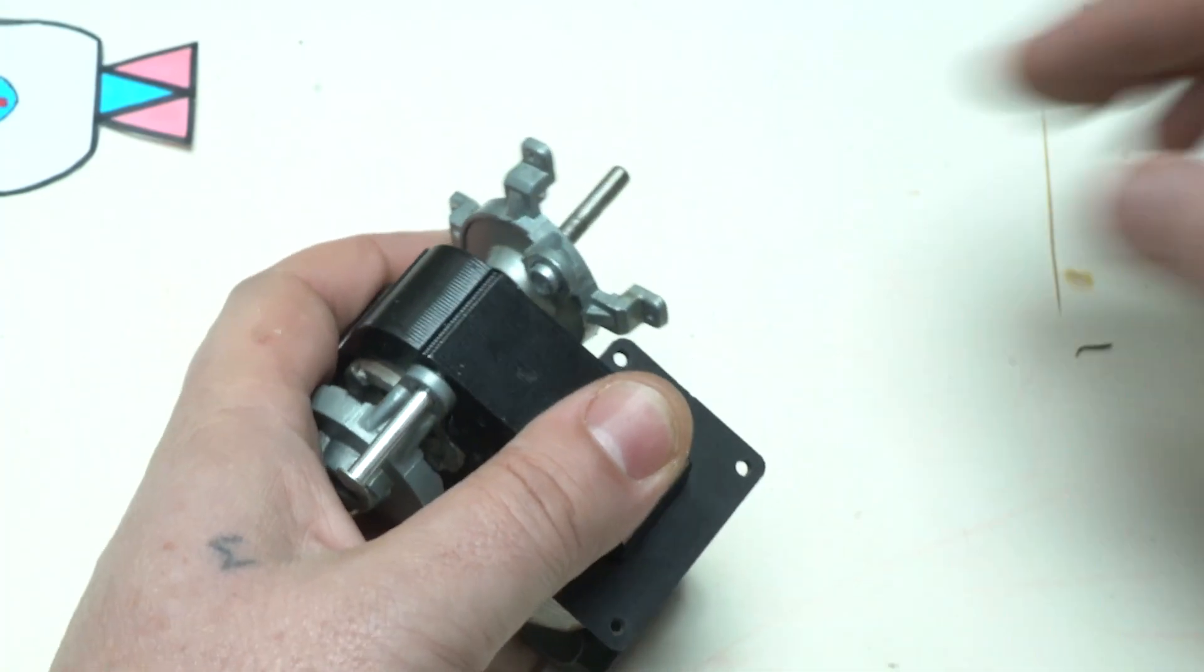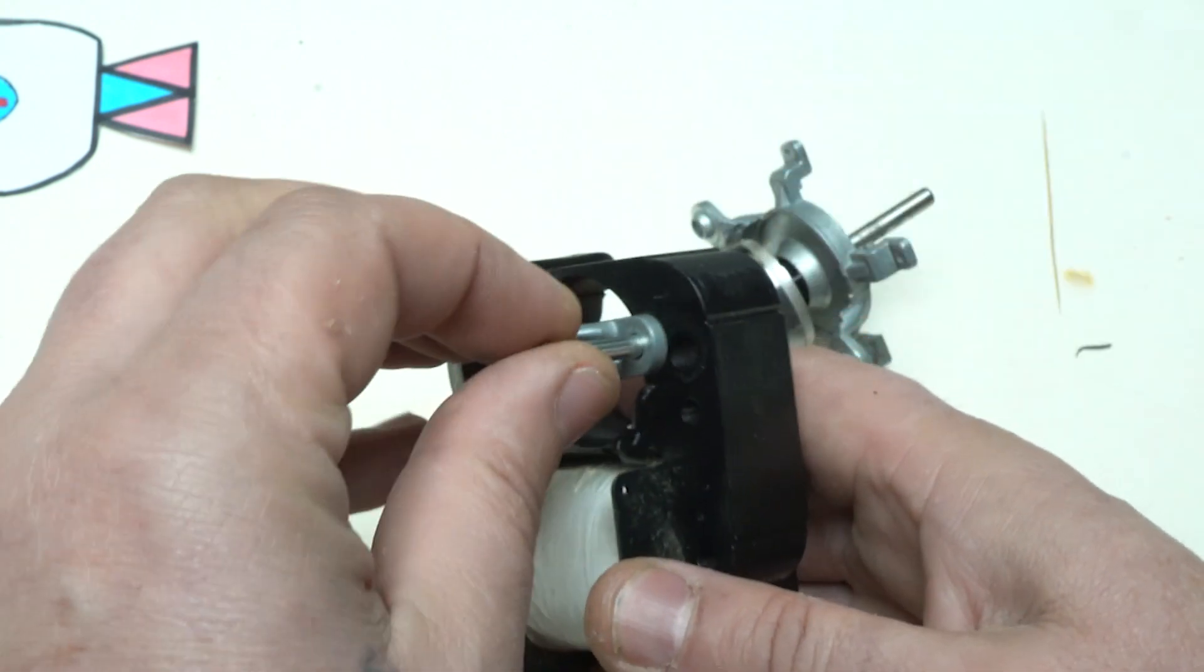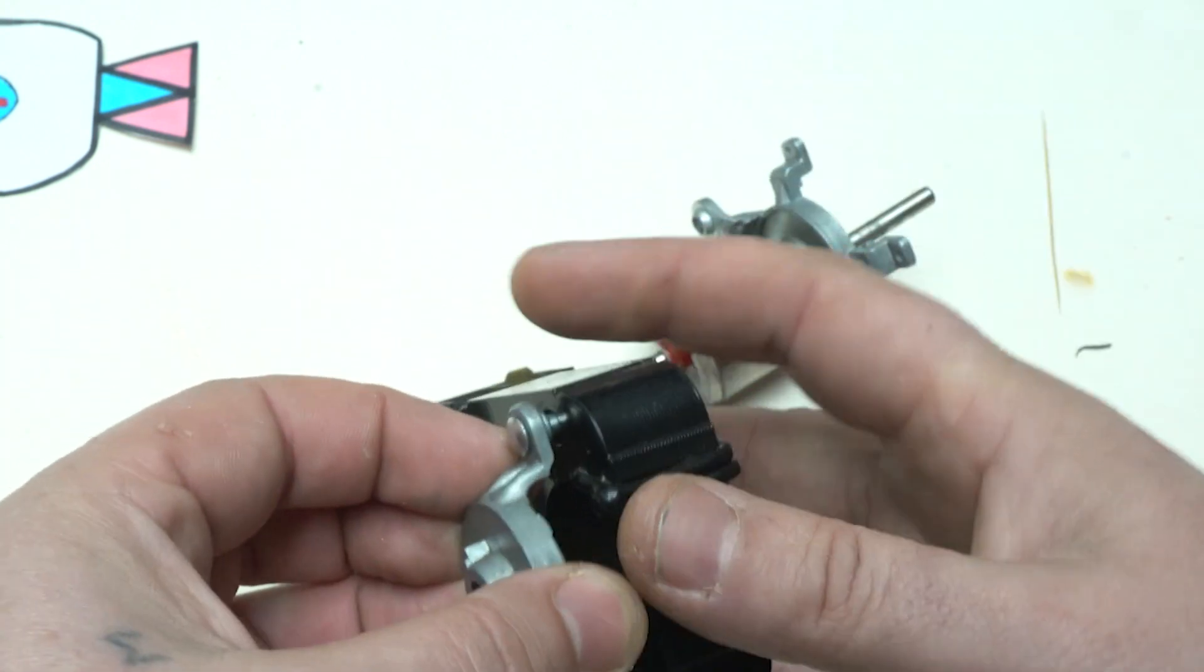By removing all mechanical parts from the motor, for example removing the rotor, with this step we make space for winding solid copper wire.